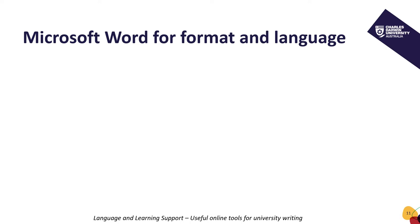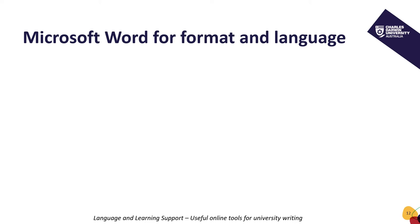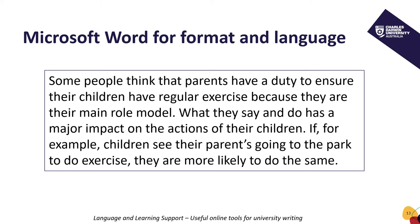Aside from formatting, Word can also give us insight into our use of language. Fourth, find a spelling mistake. You can use the editor in your review menu or look for words underlined in red. Fifth, how do we use Word to identify grammar errors? Again, use the editor in your review menu or look for words that have been underlined in blue. But of course, a word of caution: Word can't do all your work for you. Look at the paragraph on the screen and pause to see if you can find the mistake that Word has not identified.